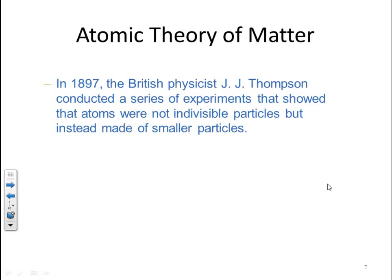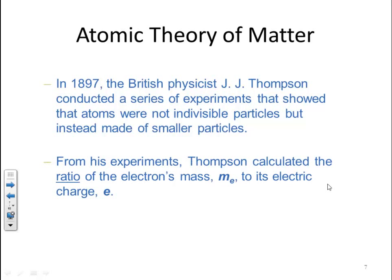In 1897, British physicist J.J. Thomson conducted a series of experiments that showed that atoms were not individual particles but instead made of smaller particles. From his experiments, Thomson calculated the ratio of the electron's mass (mₑ) to its electric charge (e), but he could not determine either the mass or the charge separately — only the ratio.